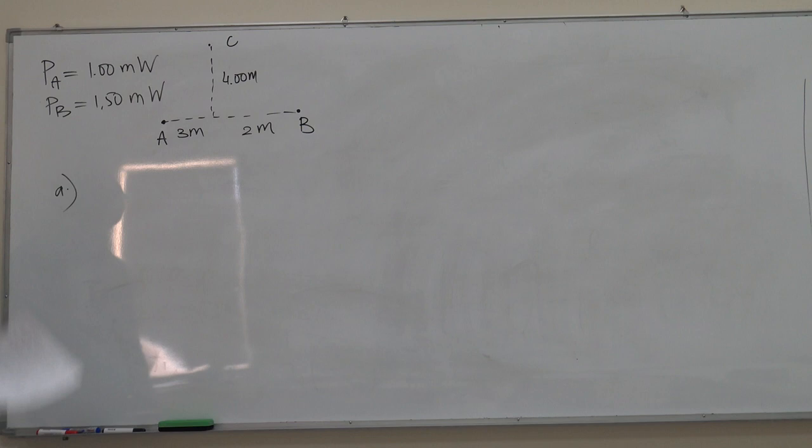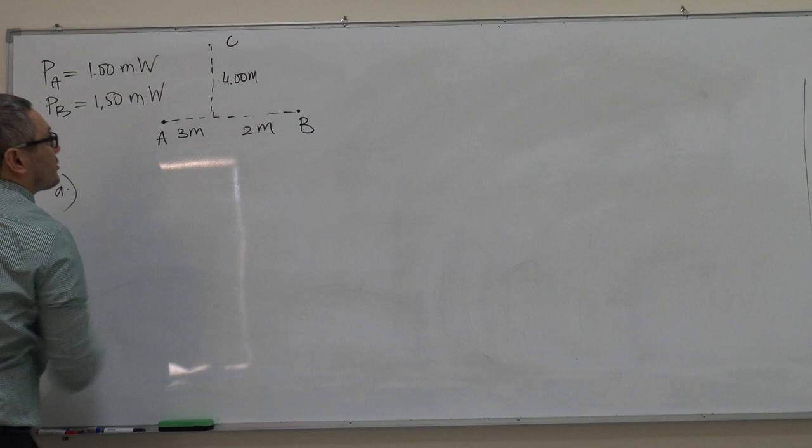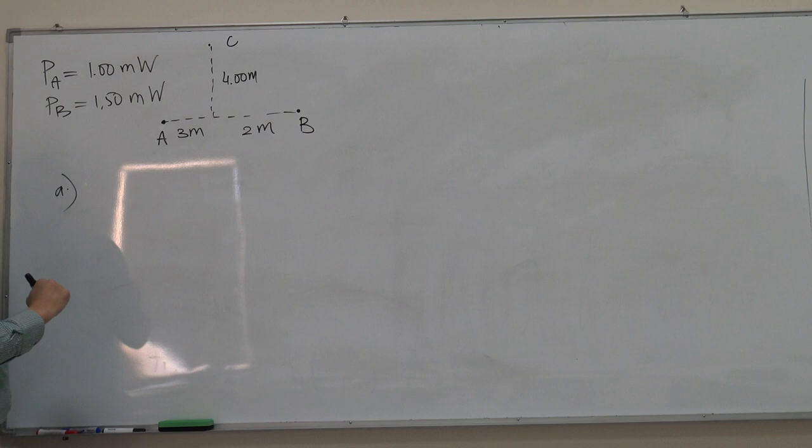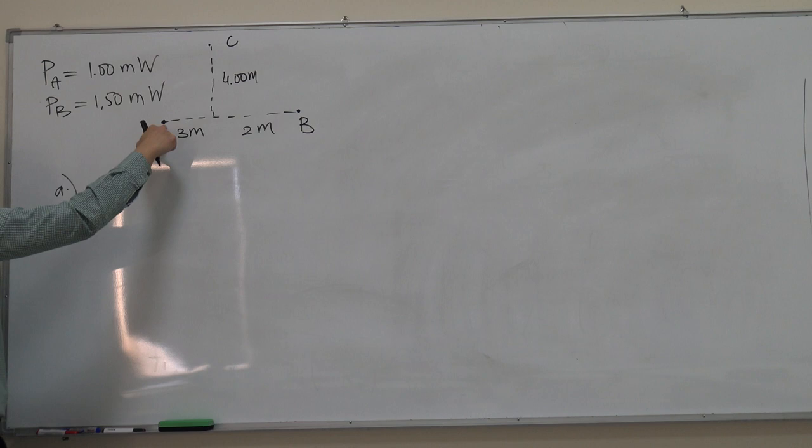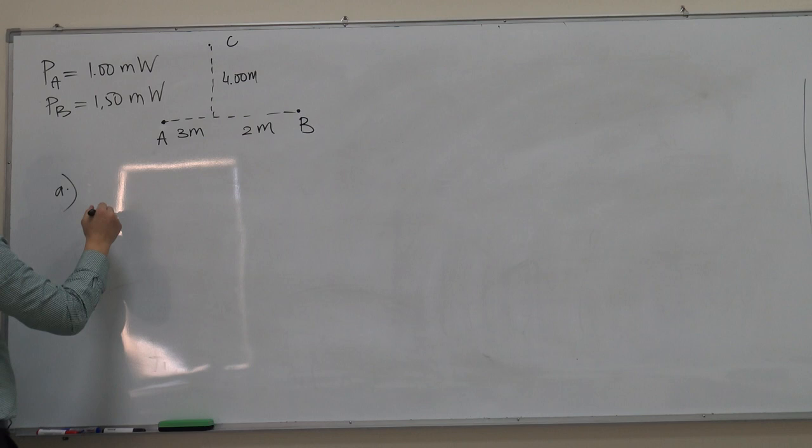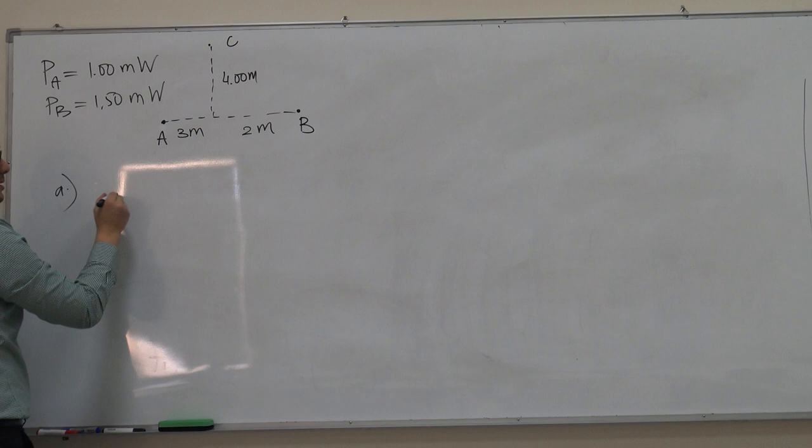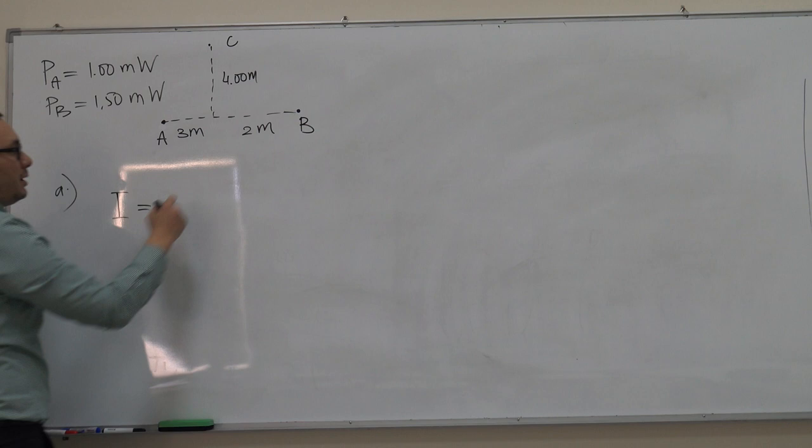In part A of the question, we need to find the intensity level in decibels when only A is turned on. So B is not working, just A is working. Let's first calculate the intensity of the sound emitted by point A at point C. We know that A is a point source, so we can use the expression for the intensity of a point source of sound.